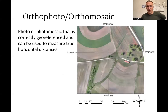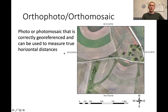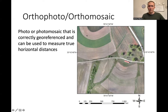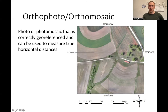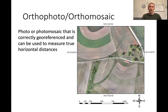An orthographic image is one that can be used for measurement. It's a photo mosaic that is correctly georeferenced and can be used to measure true horizontal distances — you can measure area, measure length. The image is georeferenced, so you can see latitudes and longitudes, and it's correctly scaled, with an accurate scale bar everywhere in the image. For the small scales we're working at, we can measure these distances accurately.